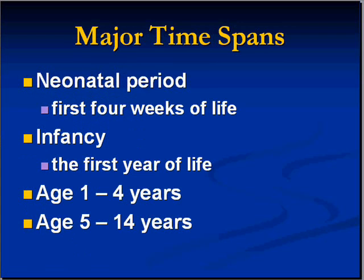Let's make some basic definitions so we know what we're talking about when we use the term neonatal. A neonate is a person four weeks of life old or less — from birth to four weeks is the neonatal period. After that, they're known as infants up until their first birthday. From one to four years, the best term is toddler or preschool. And children from five to fourteen are known as school-age children. These are the time spans we'll be talking about.